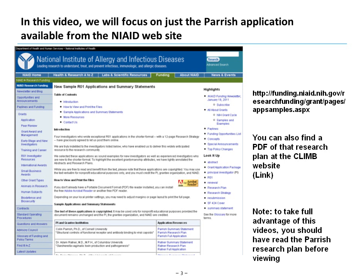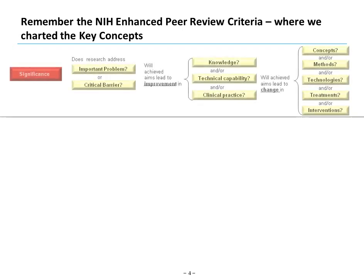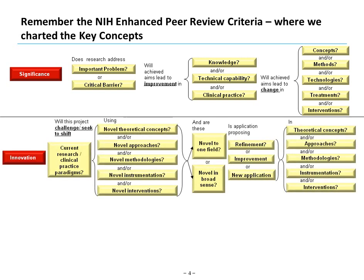We're going to dive into the science in a detailed way, so it's helpful to have at least a big picture view of what Parrish is trying to accomplish. Remember the NIH enhanced peer-review criteria, where we charted key concepts associated with those criteria. The first was significance — whether the research addresses an important problem or critical barrier, whether it will lead to improvement in knowledge, technical capability, or clinical practice, and whether it will produce change in methods, technologies, treatments, or interventions. Significance was very important; both applications we reviewed did pinpoint the critical barriers and important problems.